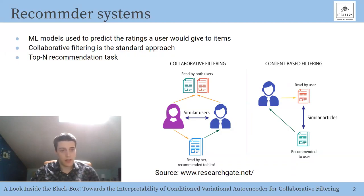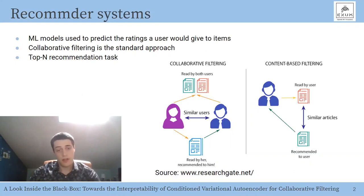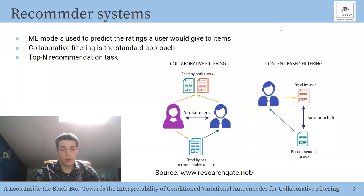Collaborative filtering is a standard approach used for recommendation systems. It simply recommends items based on a similarity computed between the users of the system. The core idea is that similar users should have similar tastes. In this paper, we work on models designed for the top-N item recommendation task, where the goal is to produce a ranking for the user with the most appealing items at the top positions.